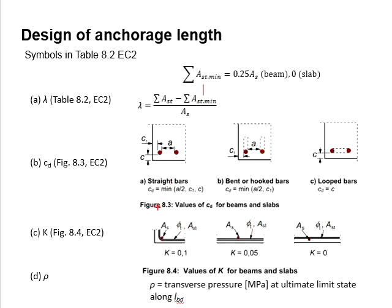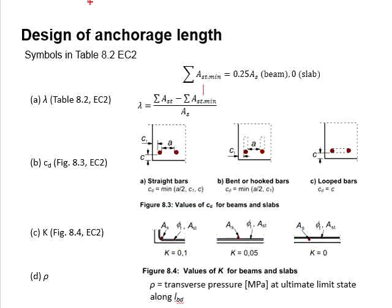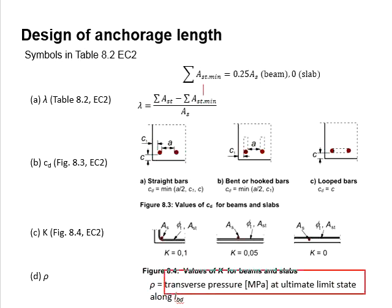Under different forms of transverse reinforcement, the k value varies. The lambda value is obtained based on these equations, which quantify the area of the transverse reinforcement relative to the area of the reinforcement bar to be anchored. As for rho, it represents the transverse pressure at the ultimate limit state along the anchorage length.